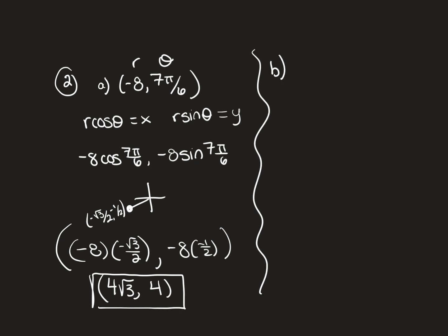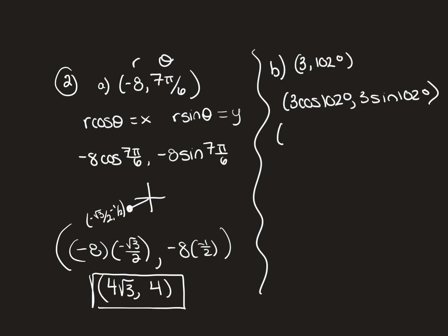For Part B, they give (3, 102°). This one requires a calculator — you compute 3·cos(102°) for x and 3·sin(102°) for y. On Part A, no calculator was needed because 7π/6 is on the unit circle and I knew the exact ordered pair. But 102° is not on the unit circle. Make sure your calculator is in degree mode, and we always round to 3 decimal places unless told otherwise.